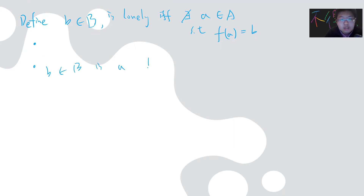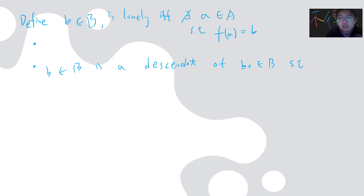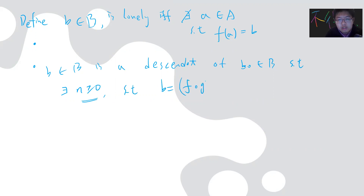And let's define: b in B is a 'descendant' of b₀ in B if there exists a positive nonzero integer n such that b = (f∘g)ⁿ(b₀). Basically, you just iterate f∘g n times starting from b₀. So when I say b is a descendant of b₀, it means exactly this definition.